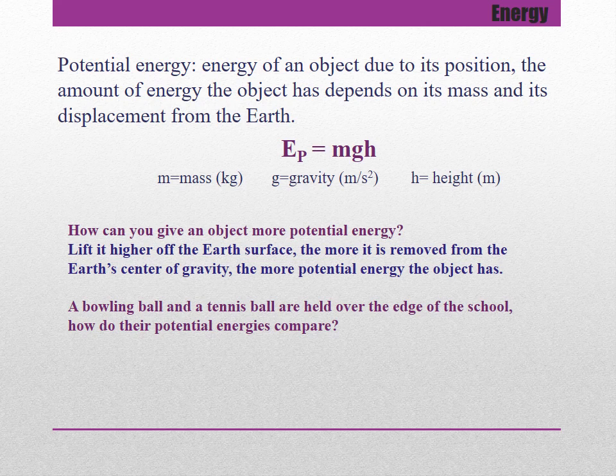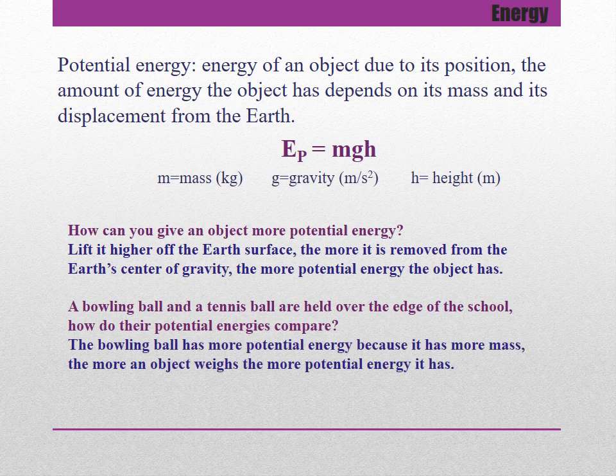A bowling ball and a tennis ball are held over the edge of the school. How do their potential energies compare? Both balls are held at the same height — they have the same displacement from the earth's center of gravity. So the bowling ball has more potential energy because it has more mass. The more an object weighs, the more potential energy it has.